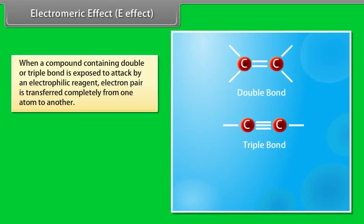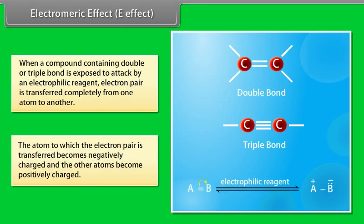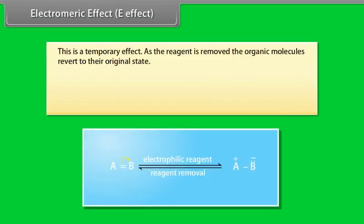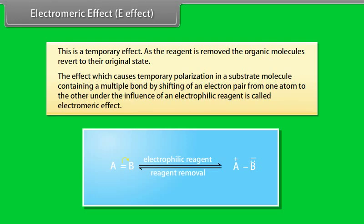Electromeric effect: when a compound containing a double or triple bond is exposed to attack by an electrophilic reagent, the electron pair is transferred completely from one atom to another. The atom to which the electron pair is transferred becomes negatively charged, and the other atom becomes positively charged. This is a temporary effect — as the reagent is removed, the organic molecule reverts to its original state. This temporary polarization due to shifting of an electron pair under the influence of an electrophilic reagent is called the electromeric effect.